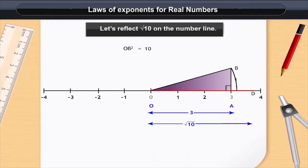OB is equal to root 10 units and OD is also root 10 units. This is a fast and simple method of reflecting irrational numbers on the number line.